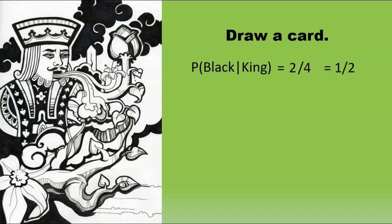In contrast, if we consider the probability of drawing a king, given that the card is black, then the relevant background fact is that there are 26 black cards, of which only two are kings. So this probability is only 1 in 13.